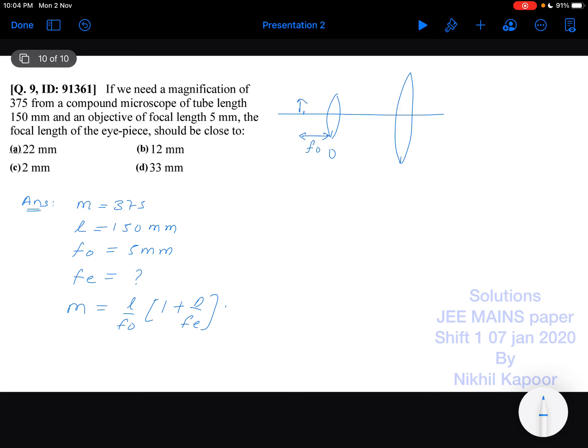And the image is formed very close to eyepiece. So this would be uo and this would be vo. As we know that the magnification will be equal to magnification produced by the objective multiplied by magnification produced by the eyepiece. So it will be vo upon uo into 1 plus d upon fe.